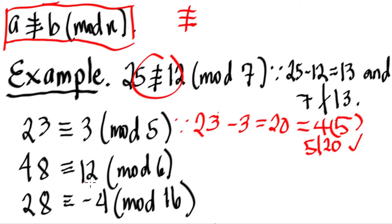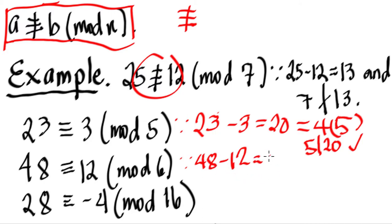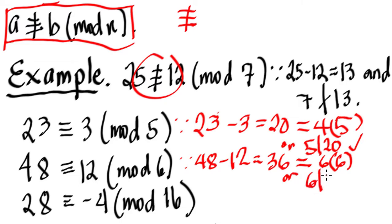How about this: 48 is congruent to 12 modulo 6. We check because 48 minus 12 equals 36, and 36 equals 6 times 6. So 6 divides 36, or 6 is a factor of 36 — confirmed congruent.